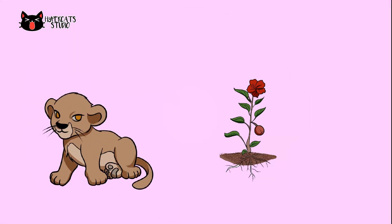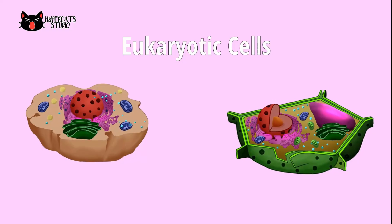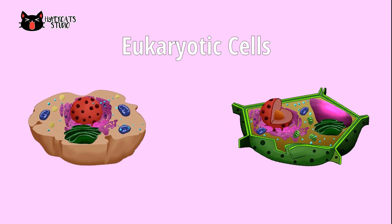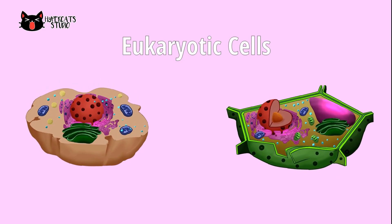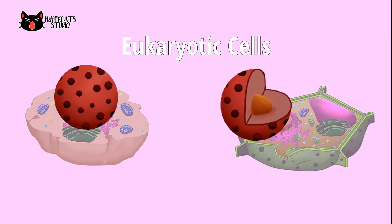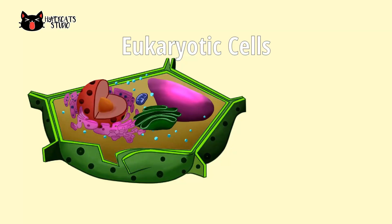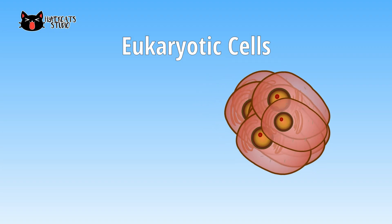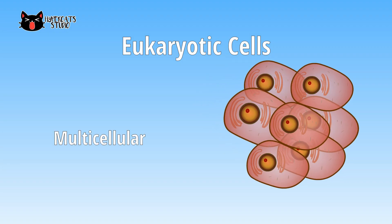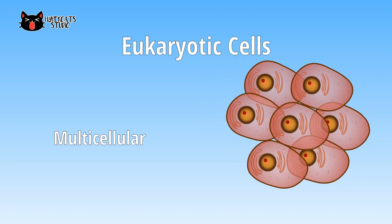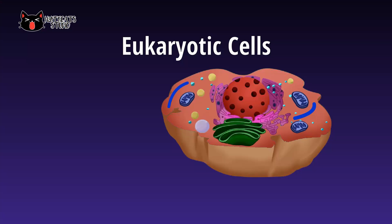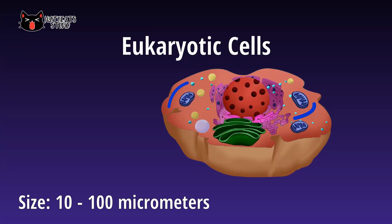Organisms like plants and animals are based on eukaryotic cells. This type of cell generally has a nucleus, an organelle that contains the DNA of the cell. It has various organelles that differ among different organisms. Most organisms based on eukaryotic cells are multicellular, meaning they use many different cells to function. Its size is quite larger than a prokaryotic cell, ranging from 10 to 100 micrometers.